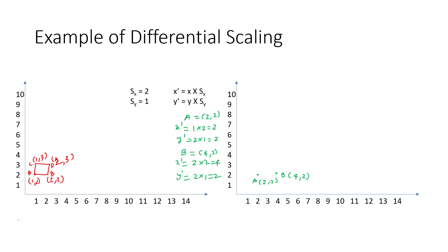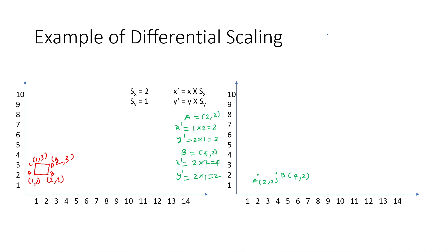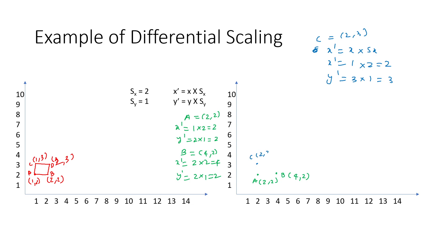For point C at (1,3): X'=X×Sx=1×2=2, and Y'=Y×Sy=3×1=3. So C'=(2,3).